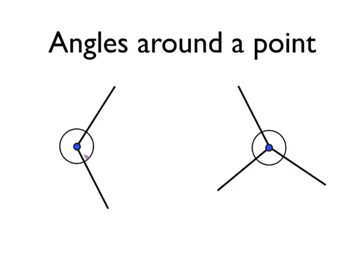Angles around the point look like this. I've drawn two angles in the left-hand diagram, and in the right-hand diagram there are three angles. These angles are around that point where the lines meet each other.